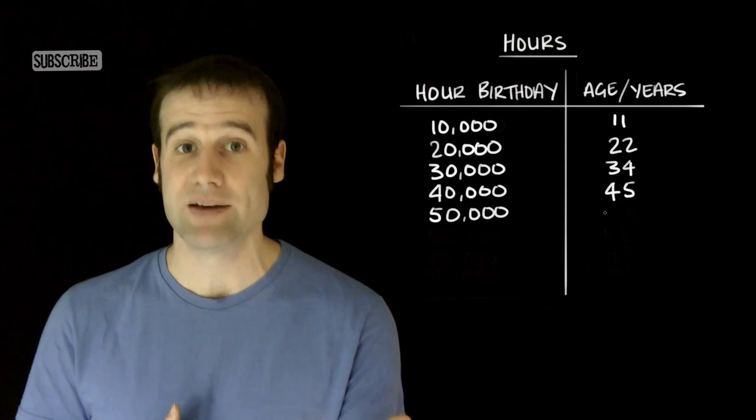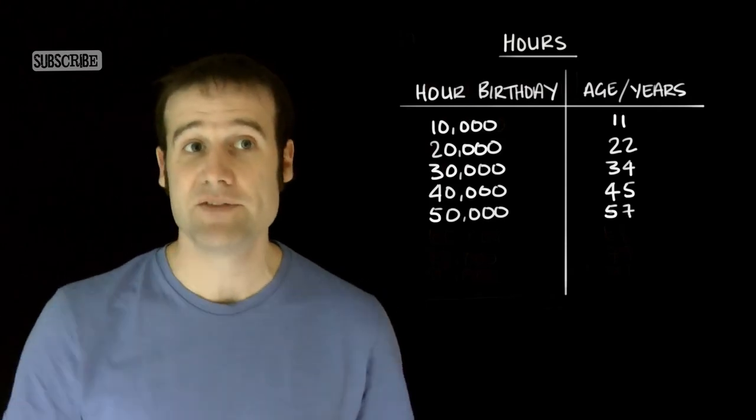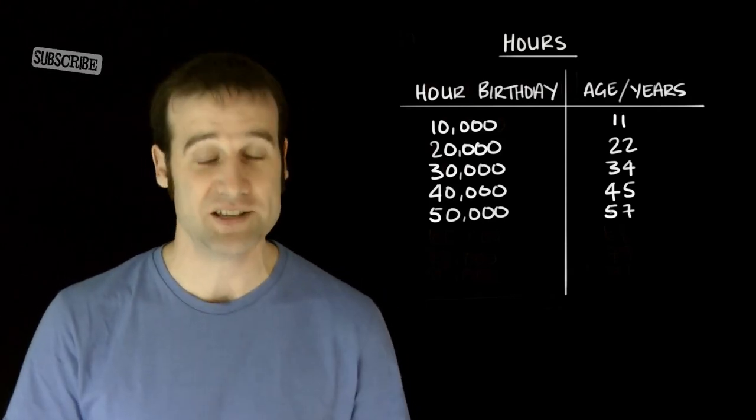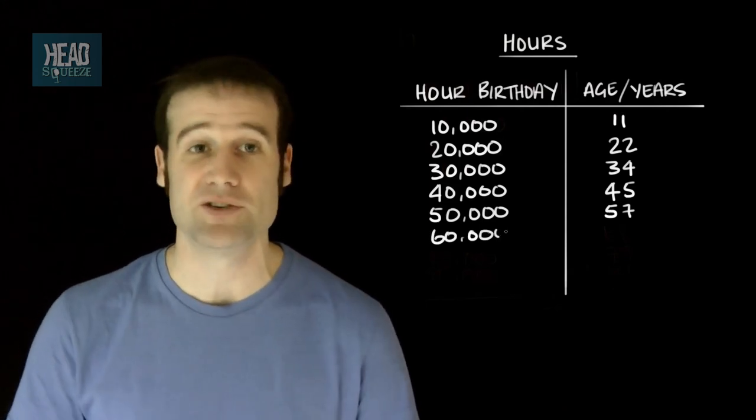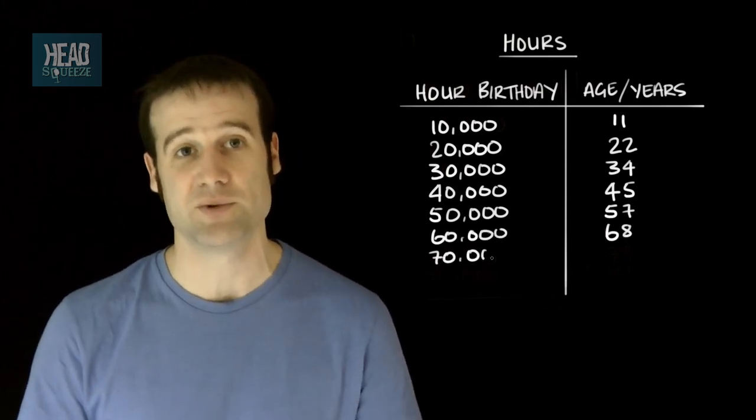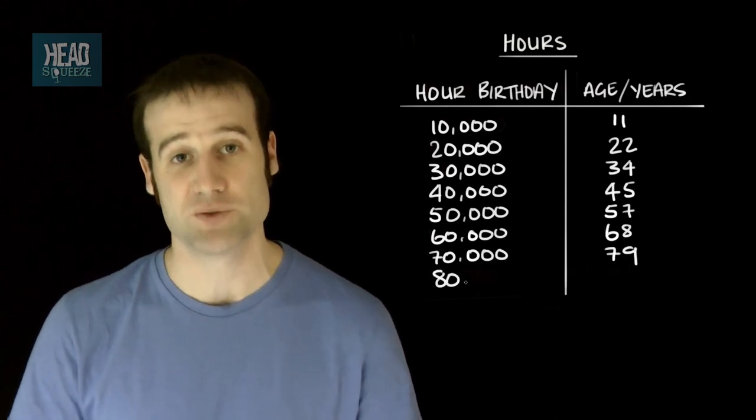Oh, you remember? 57. That's when you turned 30,000 weeks. What a year. Now beyond that, you get 60,000 hours when you're 68. 70,000 hours when you're 79. And 80,000 hours when you're 91.